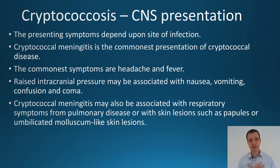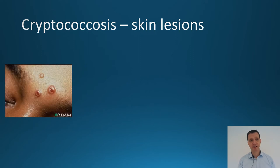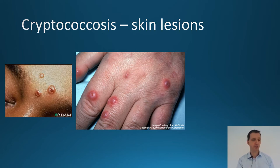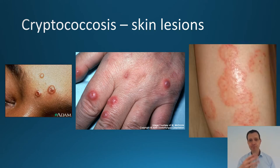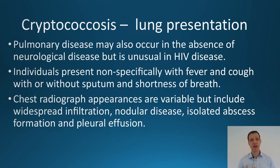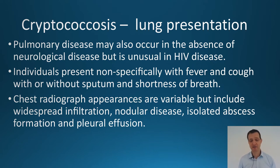Cryptococcus can also be associated just with respiratory symptoms — localized pulmonary disease — as well as skin involvement. Looking at skin lesions: there are lesions on the forehead, on the hand, and these are typical molluscum contagiosum appearances. Obviously if you know a patient is HIV positive and immunosuppressed, these lesions may be more widespread around the body. Regarding lung presentation, individuals may present non-specifically with a bit of fever, a bit of a cough, sometimes with and without sputum, sometimes with and without shortness of breath.